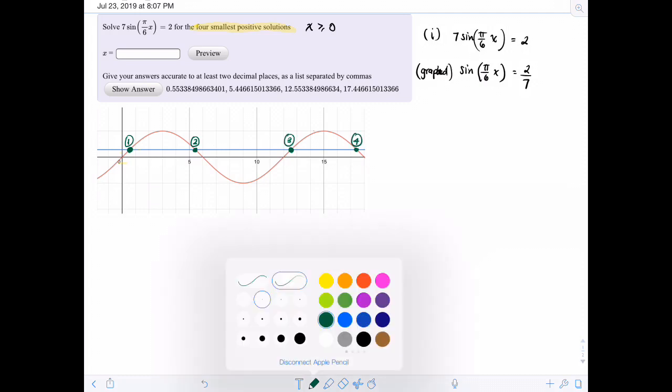And just to clarify, the blue line here is y equal to 2 sevenths, and the curve is the sine of pi over 6x. So this is a tool that you can use for everything. If you have an equation you want to solve, you can just graph each side of the equation and then find the intersection points. And I did this because I wanted you to see where they were.